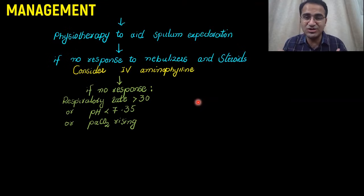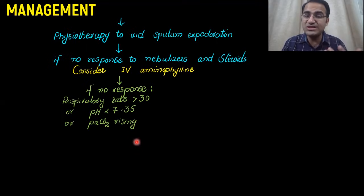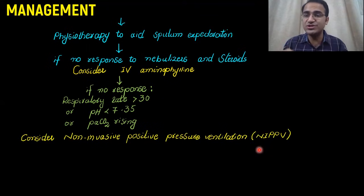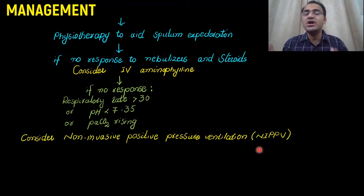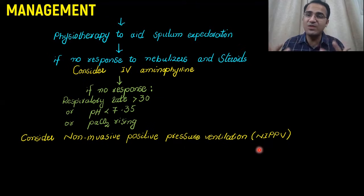How do you know the patient is not responding? If the respiratory rate is greater than 30, or the pH is less than 7.35 (acidotic), or PaCO2 is rising — then you have to consider non-invasive positive pressure ventilation. With NIV, you put the patient on a ventilator, aid their breaths, and let the patient expire all the CO2 that is being retained.